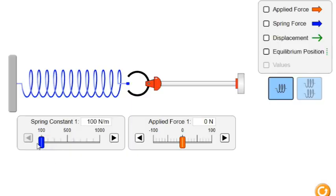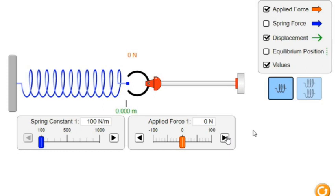Let's start by examining a single spring. We have a spring with a spring constant of 100 N per meter. This means that the force required to extend or compress this spring by 1 meter will be 100 N.